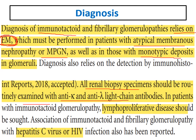With immunotactoid, we should exclude lymphoproliferative disorders. Also, hepatitis C and HIV are very common associations. We diagnose by electron microscopy in patients with atypical membranous or MPGN, and we should exclude lymphoproliferative diseases, hepatitis C, and HIV.